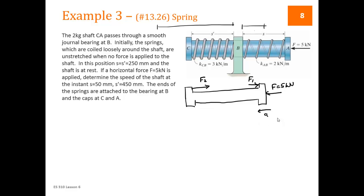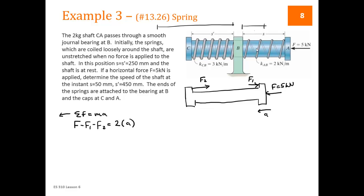I'm going to say to the left is the positive direction, since we're moving that way. Writing our force equation in this direction for sum of forces equals Ma: we have F in the positive direction, minus F1, minus F2, equals mass (2 kg) times acceleration. This is a spring, so the acceleration is not constant, because F1 and F2 depend on position X.